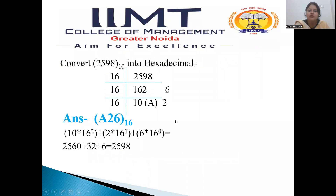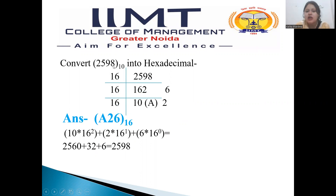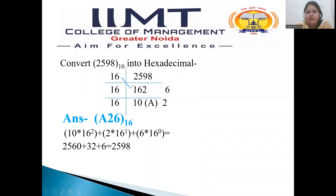Now we will see how to convert hexadecimal numbers. The digit I have taken is 2598 to the base 10, meaning decimal 2598. We will convert it into a hexadecimal number. When we divide 2598 by 16, it goes up to 162 times and the remainder will be 6. Again, we divide 162 by 16 — it goes 10 times and the remainder will be 2.